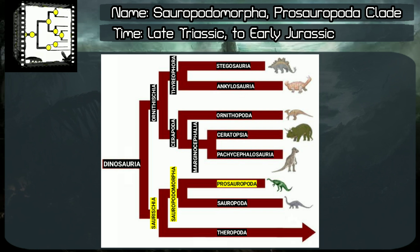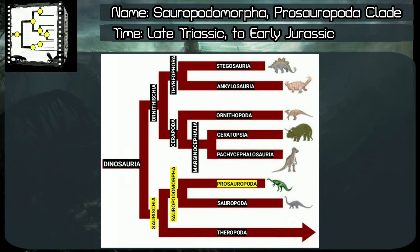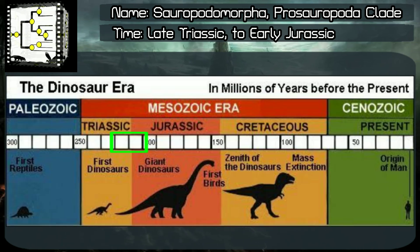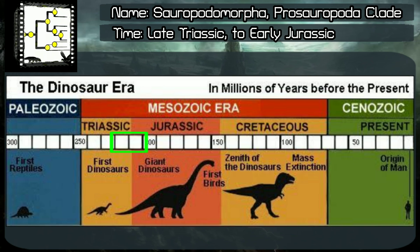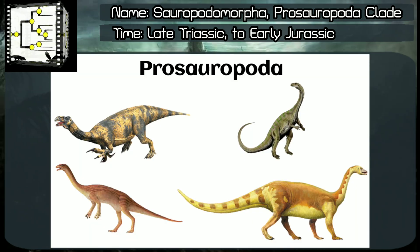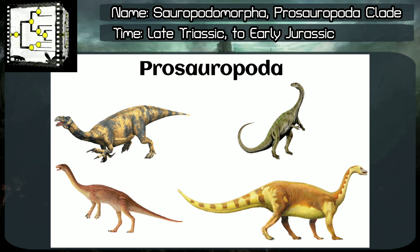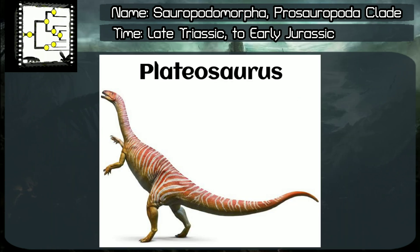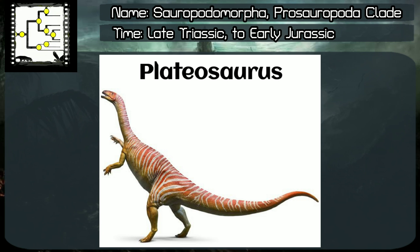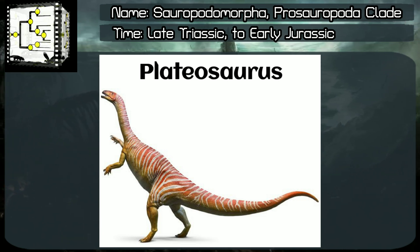Prosauropoda infraorder. Prosauropoda is the name given to the infraorder of saurischian dinosaurs that lived from the end of the Triassic period to the beginning of the Jurassic period, all over the planet. They are believed to have been the first long-necked and large herbivorous dinosaurs to emerge, and are believed to be the predecessors of sauropods. This is formed by the Plateosauria clade and the Plateosauridae family, with species like Plateosaurus trossengensis, for example.